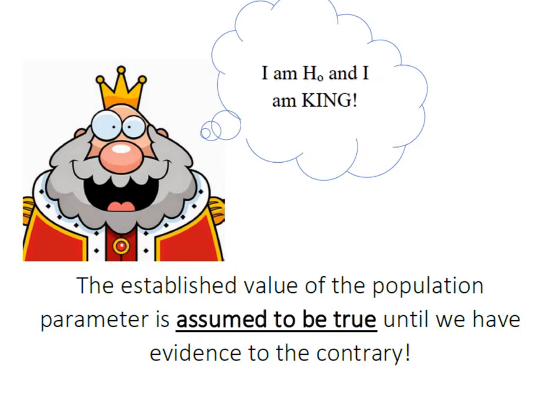It's important to remember when you undertake hypothesis testing that HO is king. In other words, the established value of the population parameter is going to be assumed to be true until we have sufficient evidence to the contrary.